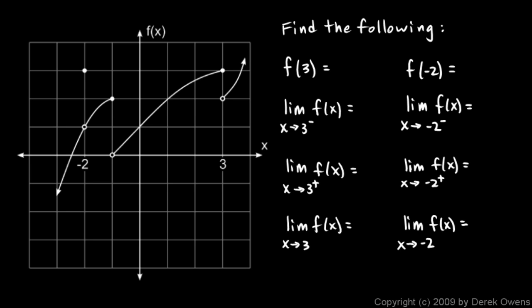First, take a look at the graph and note that we have a section of curve along here with an open circle at negative 2 and this point plotted right there. Then we have this section of curve with an open circle at one end and a closed circle at the other, and then an open circle beginning the final section of the curve. We're not told that this is an asymptote — there's no dotted line — so this piece of the curve may continue on to the right. We just don't know, but we're given enough information to answer these questions.